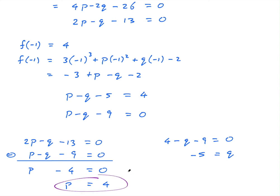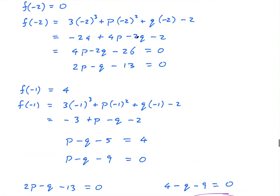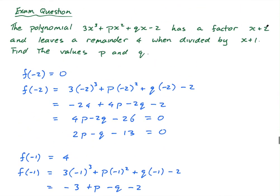So p equals 4 and q equals negative 5. Not a totally simple question, but the factor theorem and the remainder theorem is pretty straightforward. You just sub in, if you know x plus 2 is a factor, then f(-2) equals 0. And if you know x plus 1 leaves a remainder of 4, then f(-1) equals 4. And go from there.